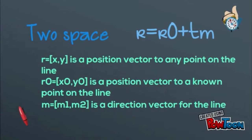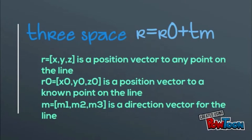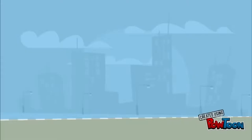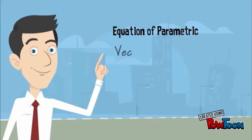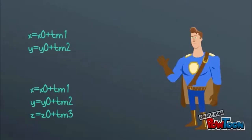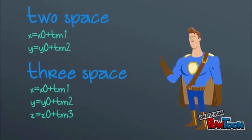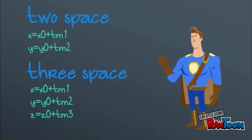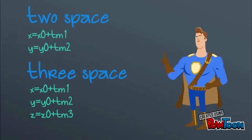For three-space, r equals bracket x, y, z is the position vector of any point on the line. r0 equals bracket x0, y0, z0 is the position vector to known points on the line. m equals m1, m2, m3 is the direction vector. The parametric form for two-space is: x equals x0 plus t·m1, y equals y0 plus t·m2. For three-space: x equals x0 plus t·m1, y equals y0 plus t·m2, z equals z0 plus t·m3.